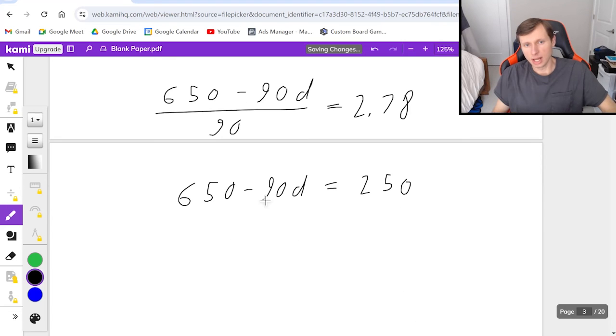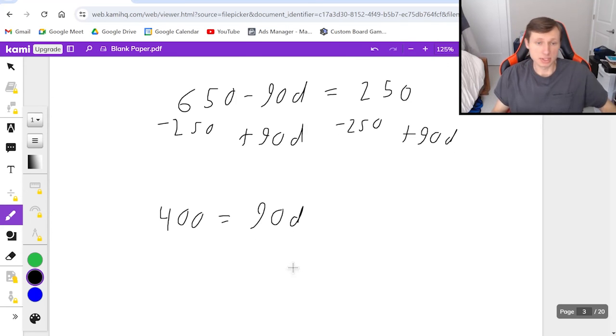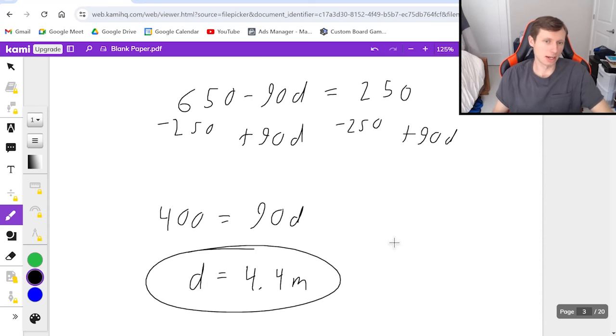So 2.78 times 90 is 250. I will add 90d to both sides and subtract the 250 from both sides, giving me 400 equals 90d. Divide both sides by 90, and we'll get a distance of 4.4 meters. That's how far the log moved. And that's it for that problem.